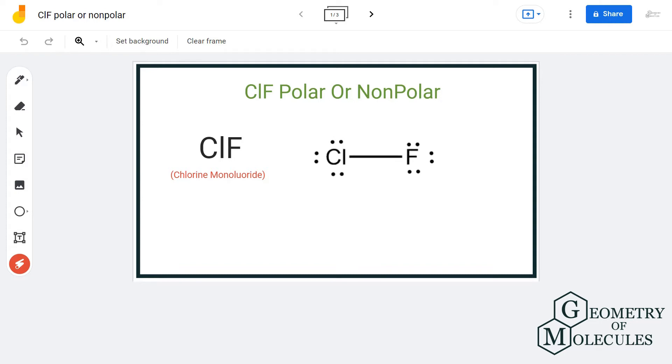So the Lewis structure for this molecule is quite simple because it has one chlorine atom forming a bond with one fluorine atom. Its linear structure might give you an idea that this is a non-polar molecule, but wait, we shall first look at the electronegativity values of both chlorine and fluorine atoms.